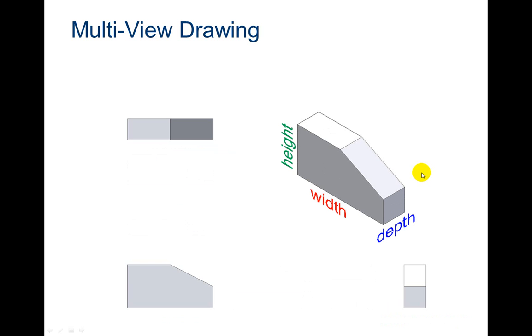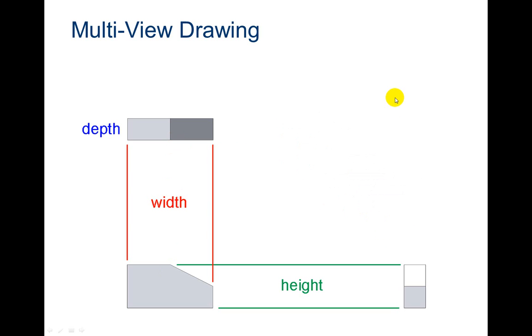Our height, width, and depth. Our width is going to be here, height, and then depth. So the height is shown on the front and the right side. The width is on the front and the top view. And your depth is shown on the top and the right view.